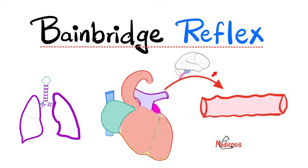In previous videos, we talked about the baroreceptor reflex, where hypotension causes reflex tachycardia, whereas hypertension causes reflex bradycardia. Today we'll talk about mechanoreceptors that you find in the heart and in the lungs, such as the case in the Bainbridge reflex, which is the topic of today's video. In the next video we shall talk about the Bezold-Jarisch reflex.